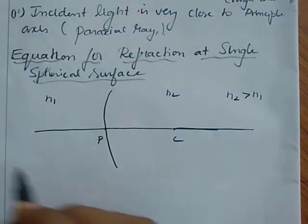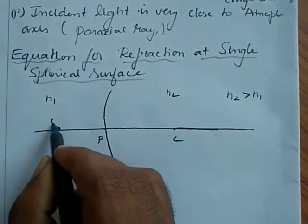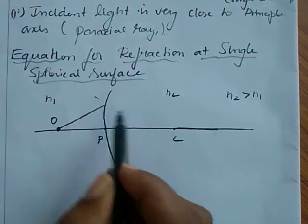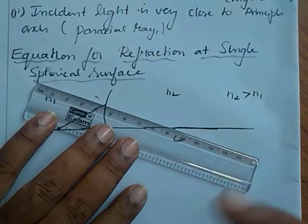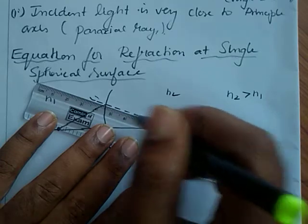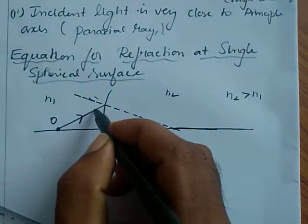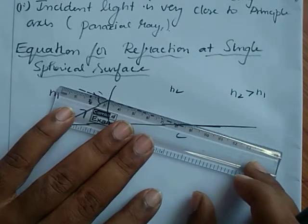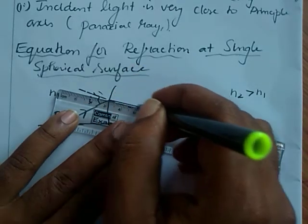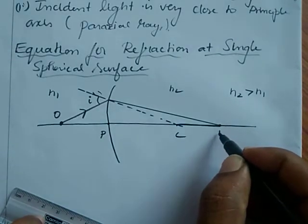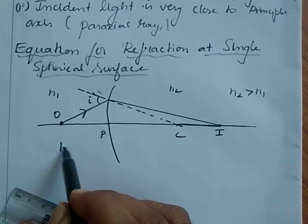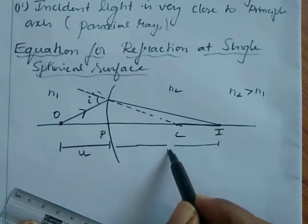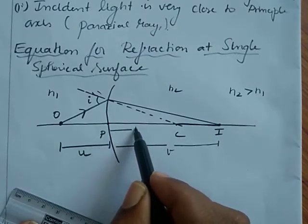Suppose I place a point object O. The light from the object falls on the spherical surface. At that point I draw a normal that will pass through the center of curvature. The ray of light travels from rarer to denser medium, so it will bend towards the normal after refraction. We can then trace the image of the object. So it is object distance U, image distance V, and from the pole to the center of curvature that is the radius of curvature R.